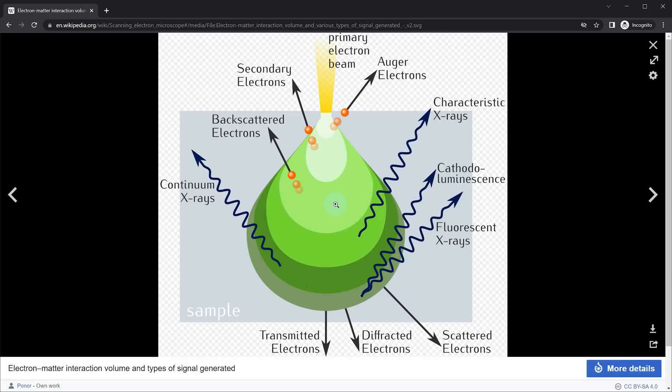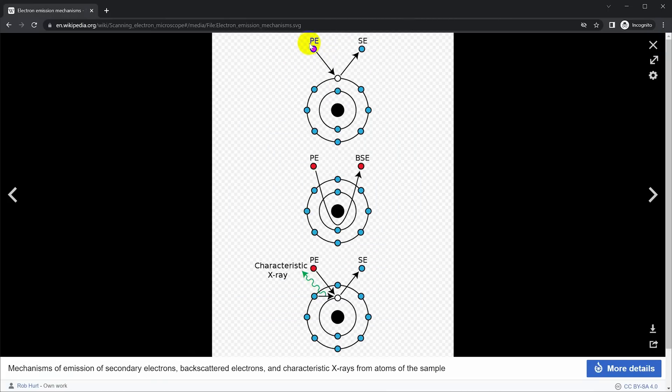And that can allow the scanning electron microscope to both produce an image but also to identify some of the properties of the sample. For example, a primary electron can come in and just knock an electron back out and so you get a secondary electron. You can get back scattered electrons where a primary electron comes in and just gets rejected back out. And you can also have a situation where a primary electron knocks a secondary electron out, but then an electron from a higher orbital will drop in and then emit some energy as x-rays. And that again helps you to identify materials in the sample.